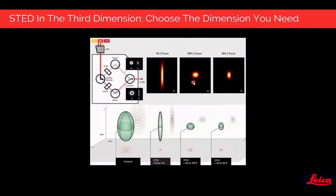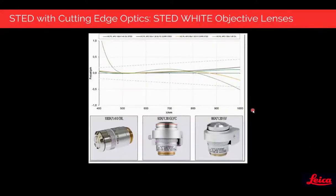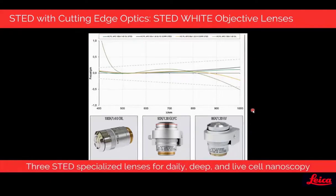We complement the white light laser and AOBS beam path with three STED lines covering the entire spectrum to optimize performance of suitable fluorophores. We can do 3D STED, selecting the dimension we need with our proven technology — allocating light to two STED pathways to get the best lateral or axial resolution, or tuning between them to optimize for the smallest focal volume. For 3D STED, we take care of inhomogeneities such as cover glass thickness, temperature changes, and refractive index mismatch using the STED White class of objective lenses with best-in-class optics, and we have three STED specialized lenses for daily, deep, and live cell nanoscopy.